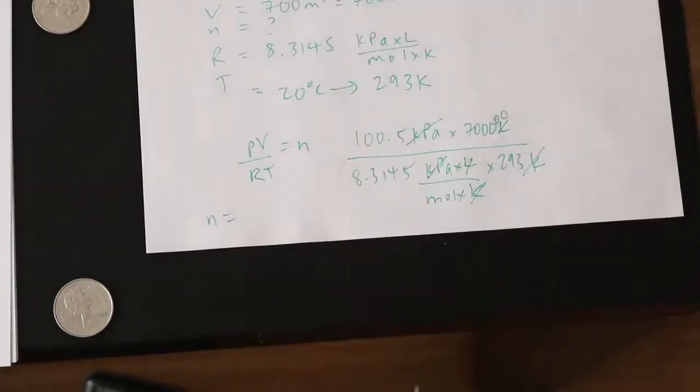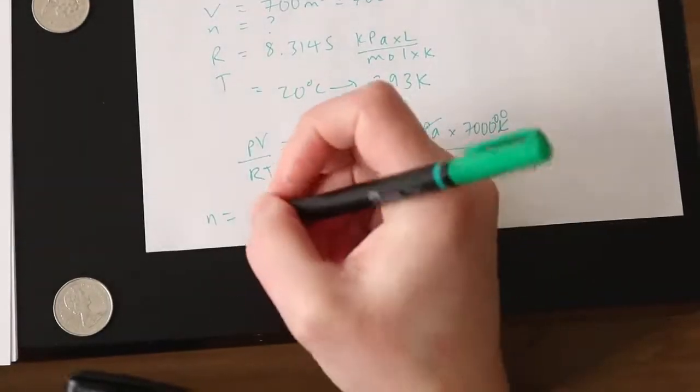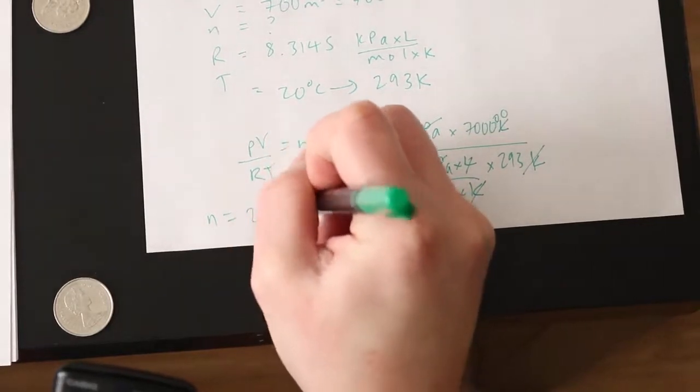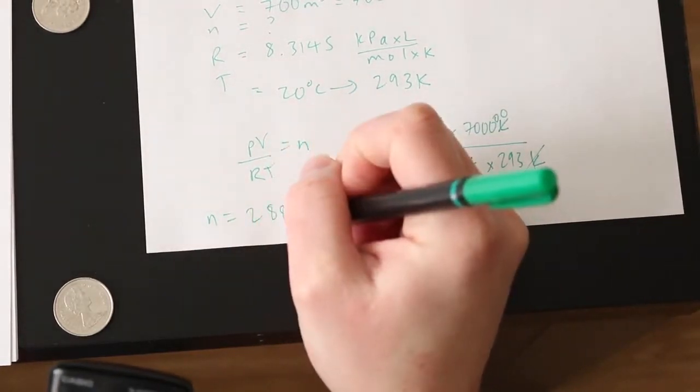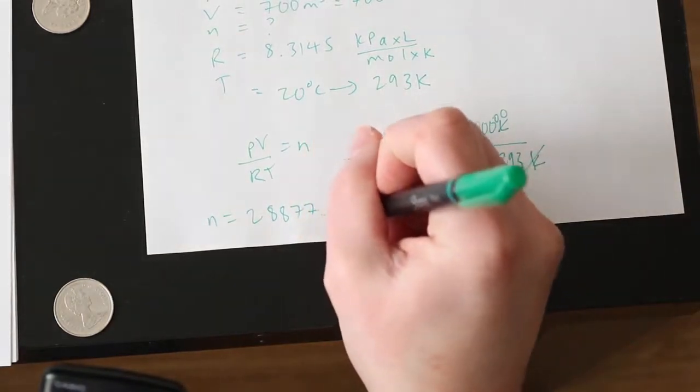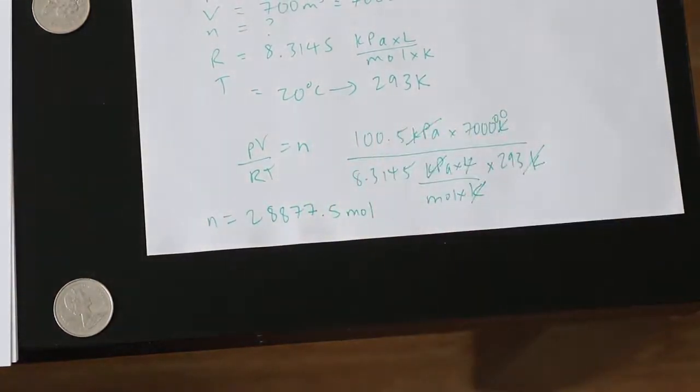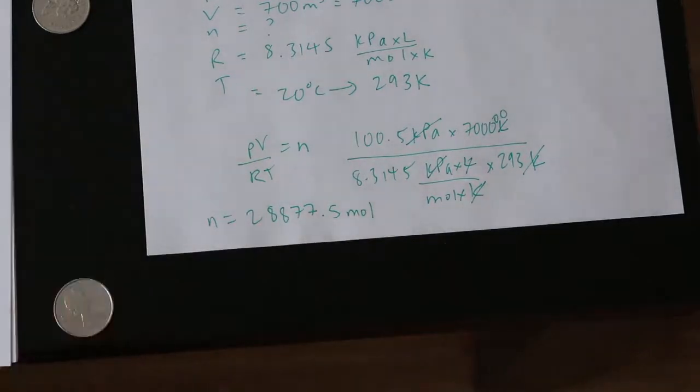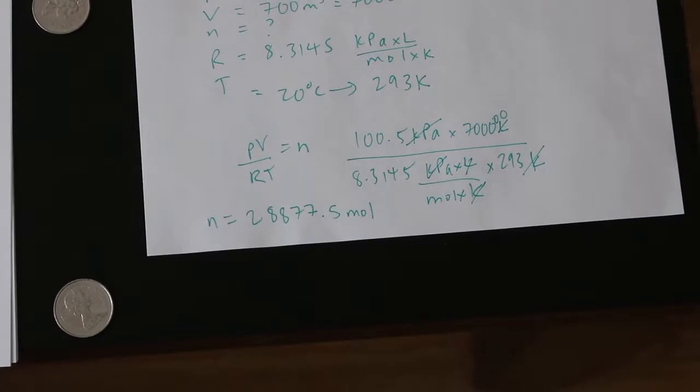Okay. And then when we punch it into our calculator we get number of moles equals 28,877.5 moles. And the answer in the answer key is a little bit different, just depending on the numbers you use. But that's how you work it out. If you had rounded earlier or later you would have gotten a slightly different number. But once you show us the working it's all good.